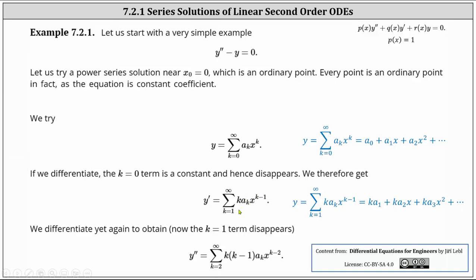If we expand this power series, notice the first term is k times a sub one, which is another constant. And therefore when we find y double prime, notice how the lower limit of the sum starts at k equals two. Y double prime is equal to the sum from k equals two to infinity of k times k minus one times a sub k times x to the power of k minus two.